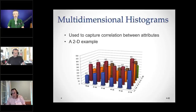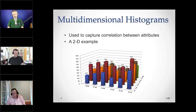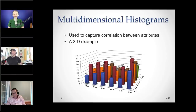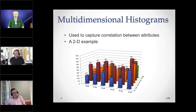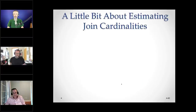Sometimes people have talked about building multidimensional histograms — taking two attributes together. This is an idea the research community has explored and would allow you to capture correlated attributes for at least two dimensions. If there are three correlated attributes, then you're in a three-dimensional space.